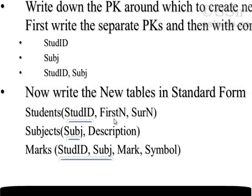This is a new table we are going to create in order to produce second normal form. I've called this new table 'student' — that is the table name, student ID is the primary key (which must be underlined), and first name and surname are the two fields dependent on that primary key.